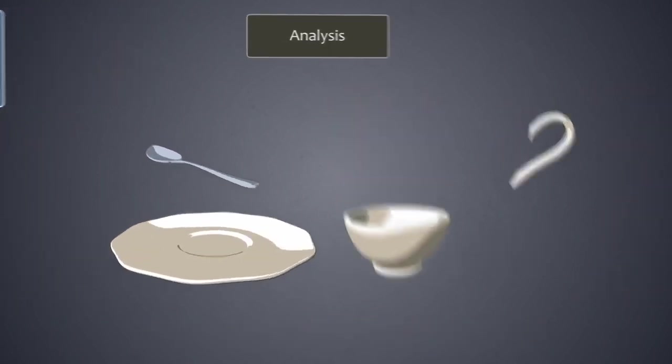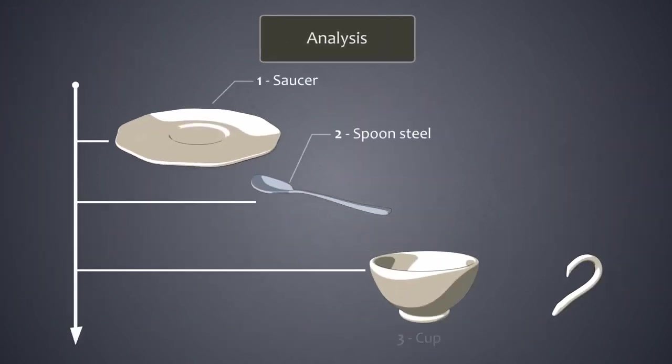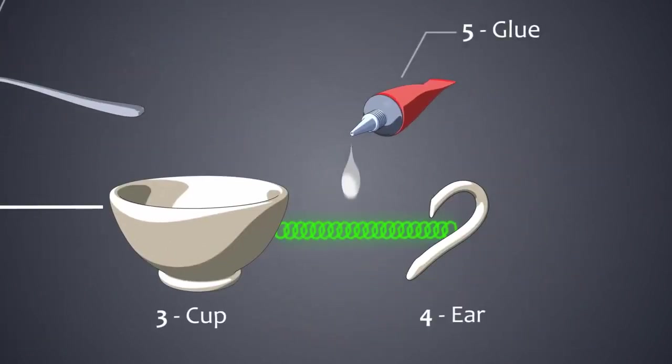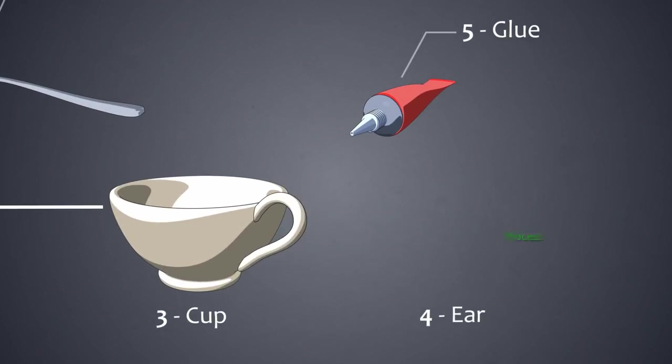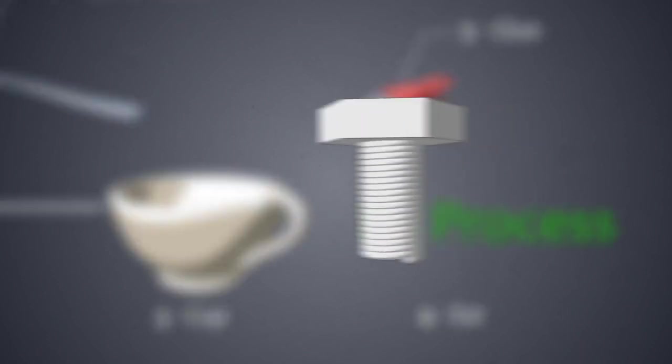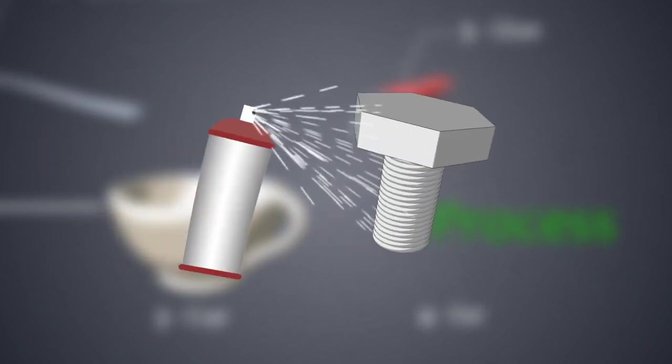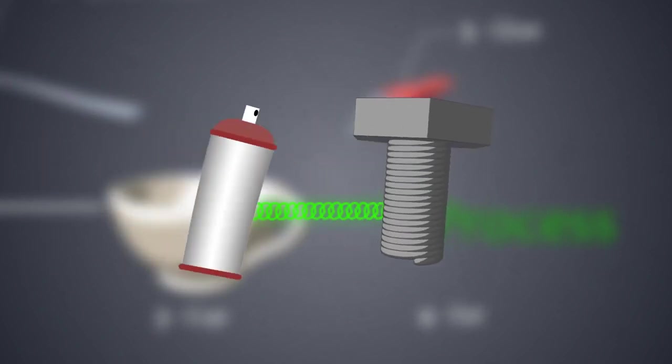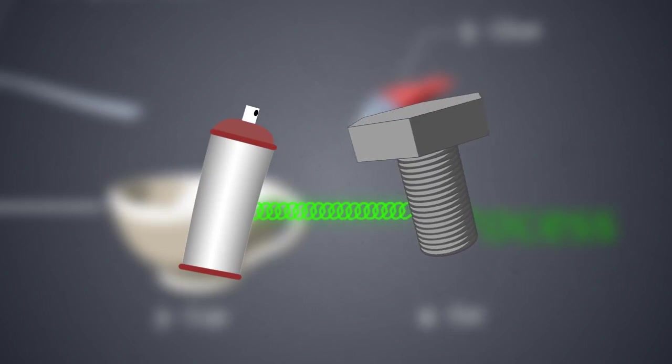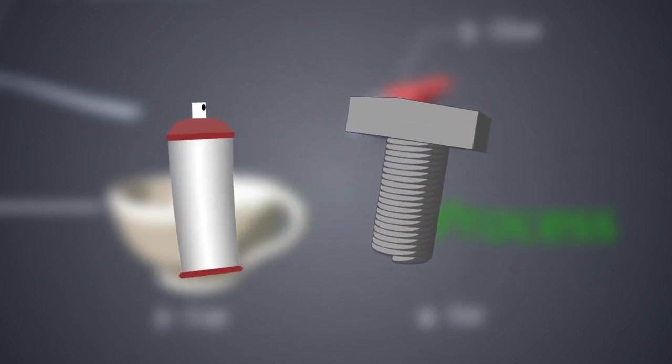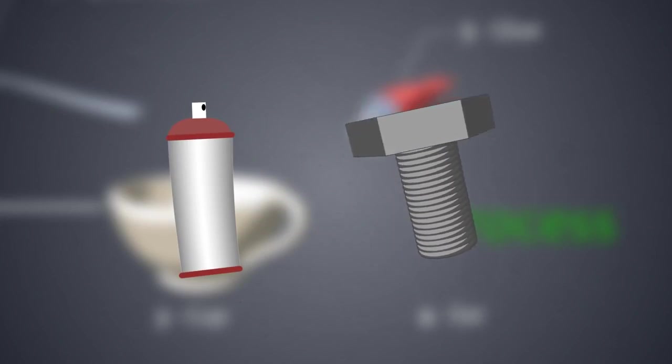A process is an action done on a combination of components during assembly. The application of glue to attach the ear to the cup is a process. If the component requires a protective layer like a coating, then the application of the coating is also a process. If the coating is on a component you buy, like a galvanized bolt, it's not seen as being separate and the two are considered to be one component.